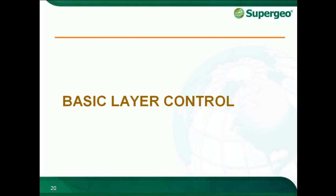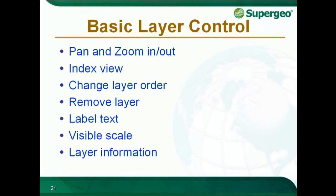After maps are added, I want to talk about some basic map control. I will start from the Pan tool, Zoom In and Zoom Out. Then adjust layer order or remove layers from the map, and finally check the layer properties.